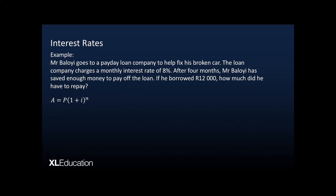We're going to use our compound interest formula. We note that the interest rate is a monthly interest rate — 8% — and our period of four months means we use an exponent of four, because interest is calculated four times. We find that after four months he has to repay 16,325 rand and 87 cents. Usually if you get a monthly or daily interest rate, chances are you're dealing with a loan shark or some other disreputable form of getting credit.